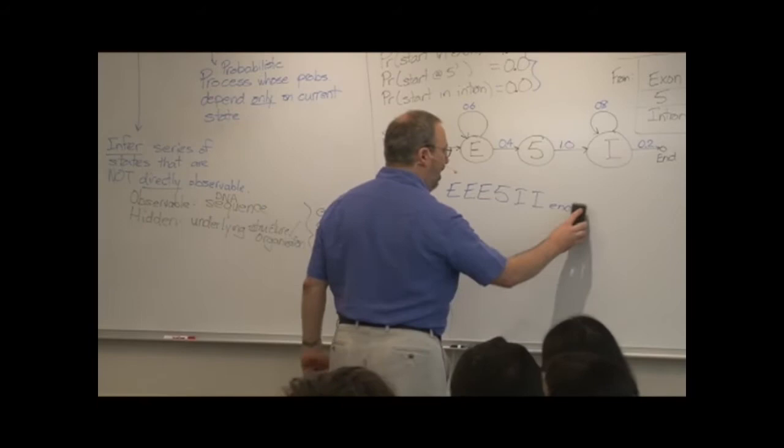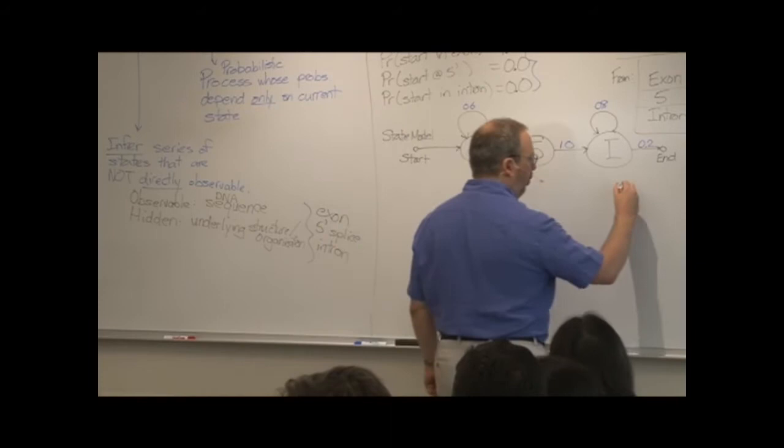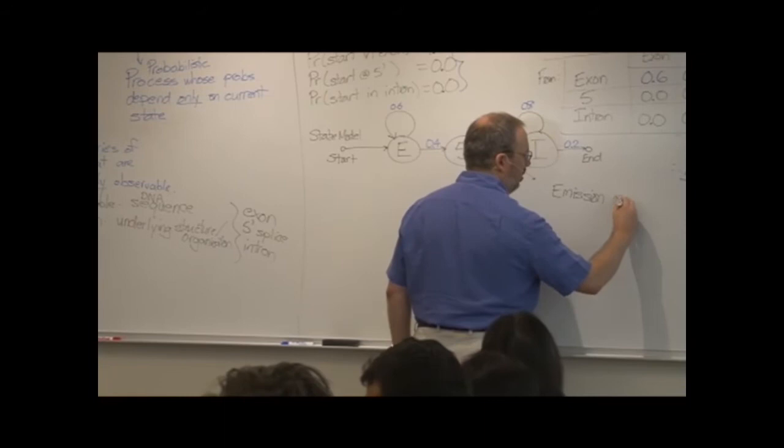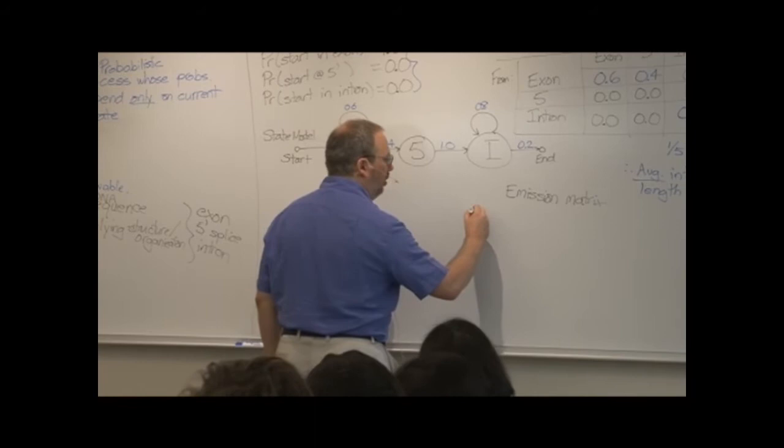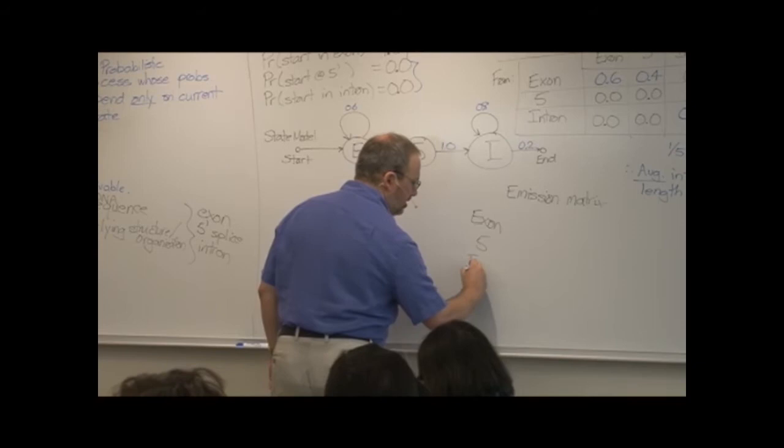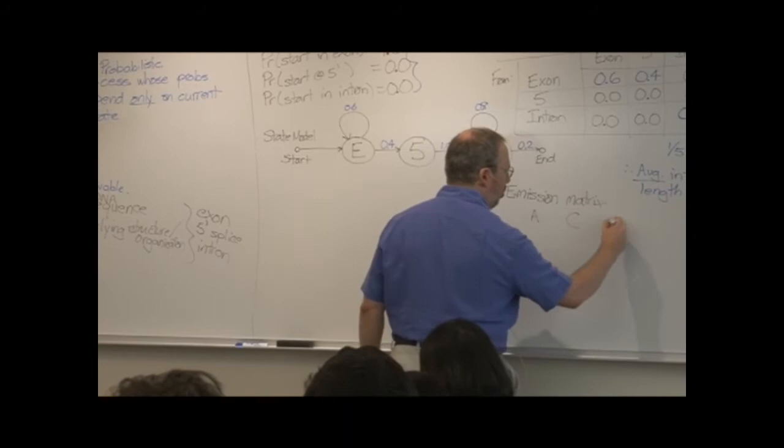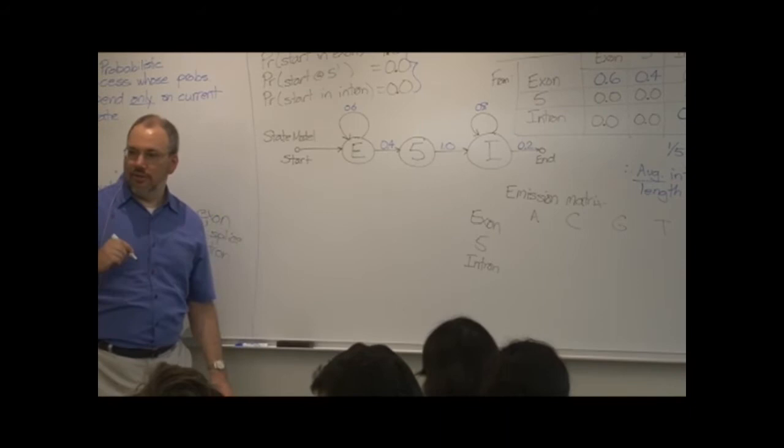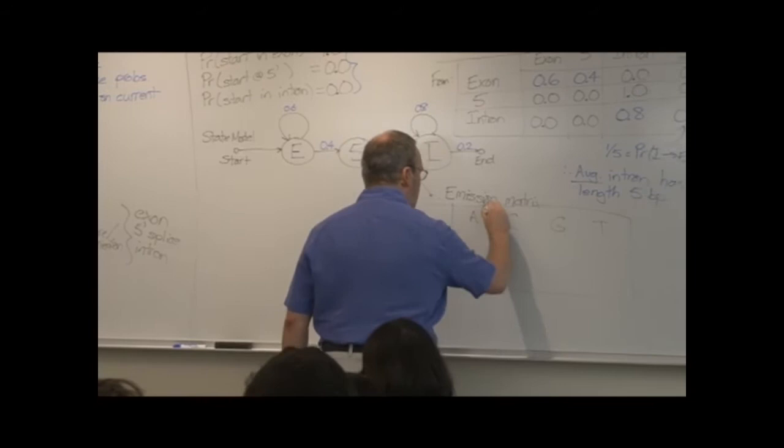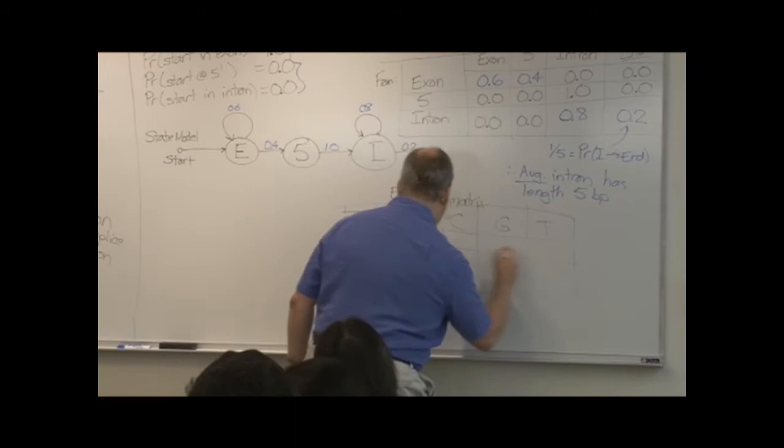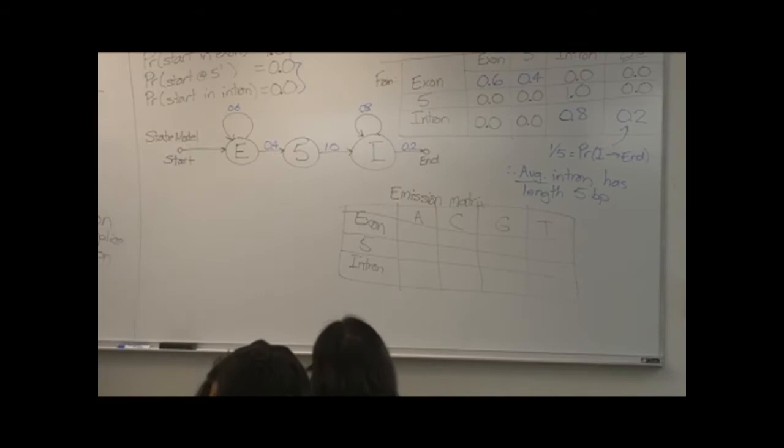So, in fact, we have one more piece of information we're going to need, which is the emission matrix. And the emission matrix is the probability that if you are in an exon, a five prime splice site, or an intron, the probability of emitting a particular nucleotide. Again, this is going to be based on your biological knowledge about the base composition of exons, introns, and five prime splice sites.